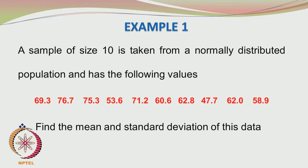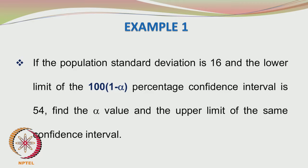You are asked to first find the mean and standard deviation of this data — this should be pretty straightforward. The next part of the example is to find the level of significance, that is, the alpha value, given the lower limit of the 100(1−α)% confidence interval is 54 and the population standard deviation is 16.